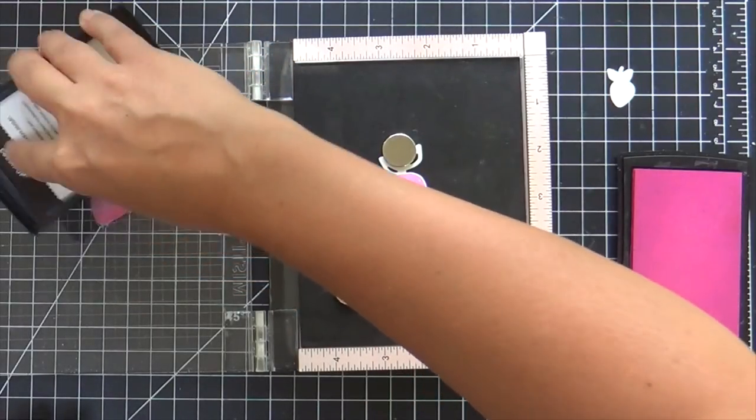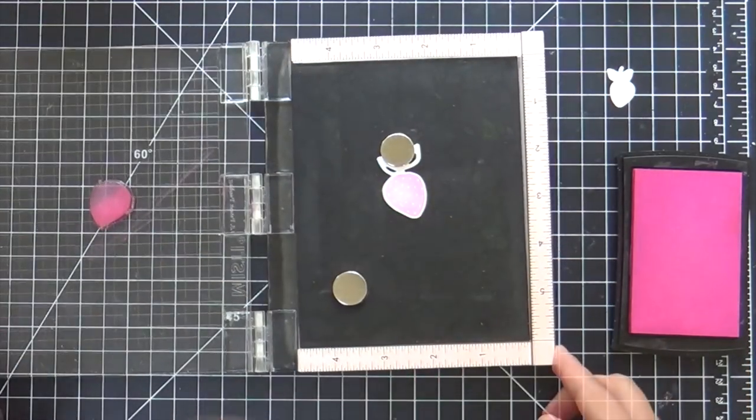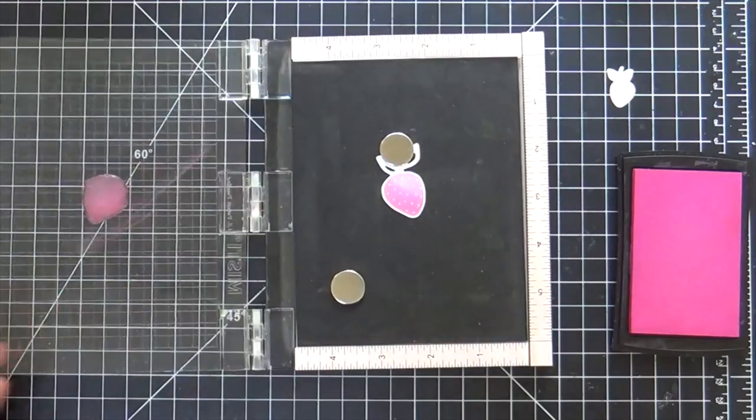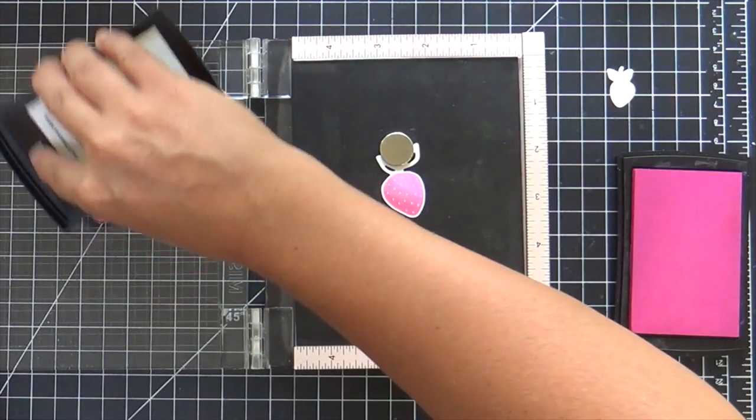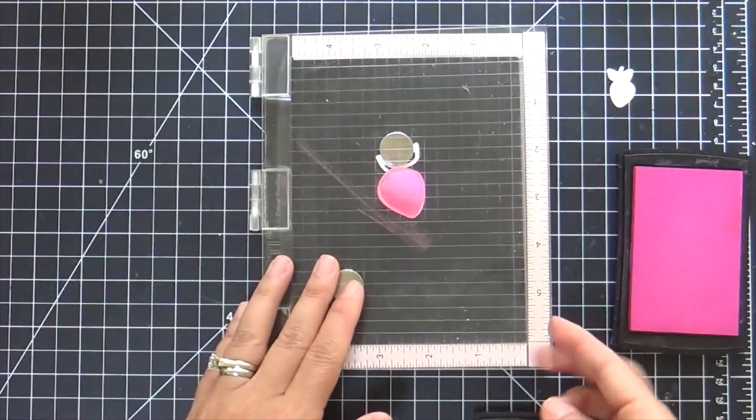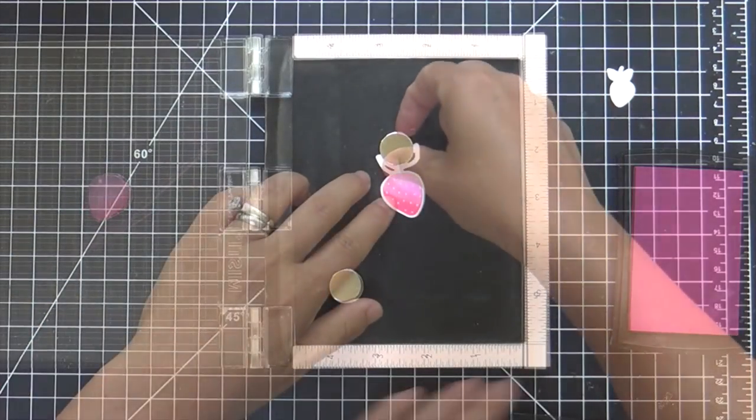So I'm stamping it a couple times to get a nice pink color and then I'm going to ink it up along the edge using Lollipop, which is kind of a reddish pink color. And I'll go back and forth between Tutti Frutti and Lollipop until I get a nice juicy strawberry.